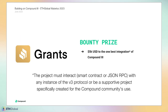The Compound Grants Bounty Prize for this year is $5,000 USD to the best integration of Compound V3. The project must interact with smart contracts or JSON RPC with any instance of the V3 protocol, or be a supportive project that is specifically created for the Compound community's use.